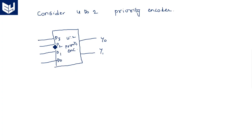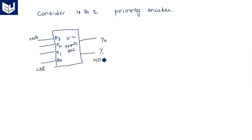Suppose D0 is activated out of all inputs — then output is 0, 0. If D1 is activated then output is 0, 1, and so on for the normal encoder. Note that LSB and MSB must be very carefully chosen in this priority encoder. If you confuse the representation of LSB and MSB, there is a problem — you cannot accomplish the priority encoder operation.